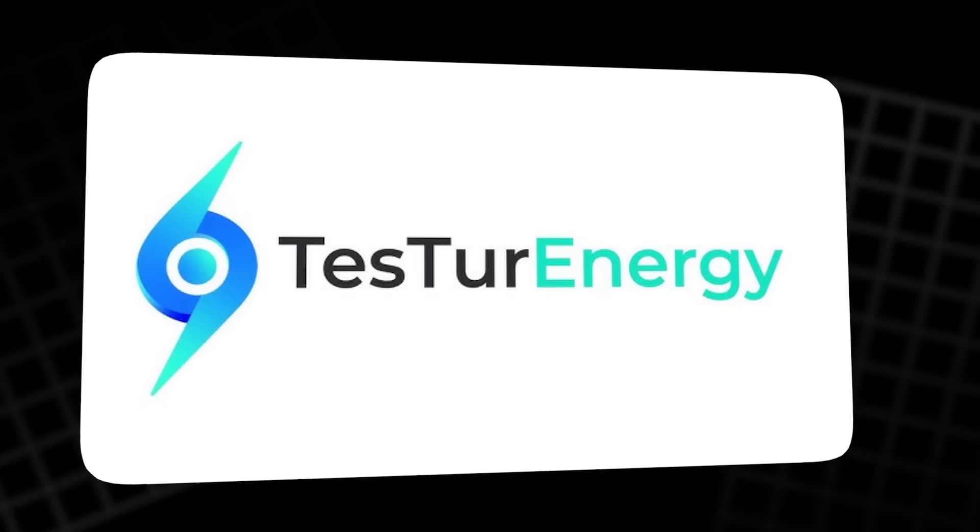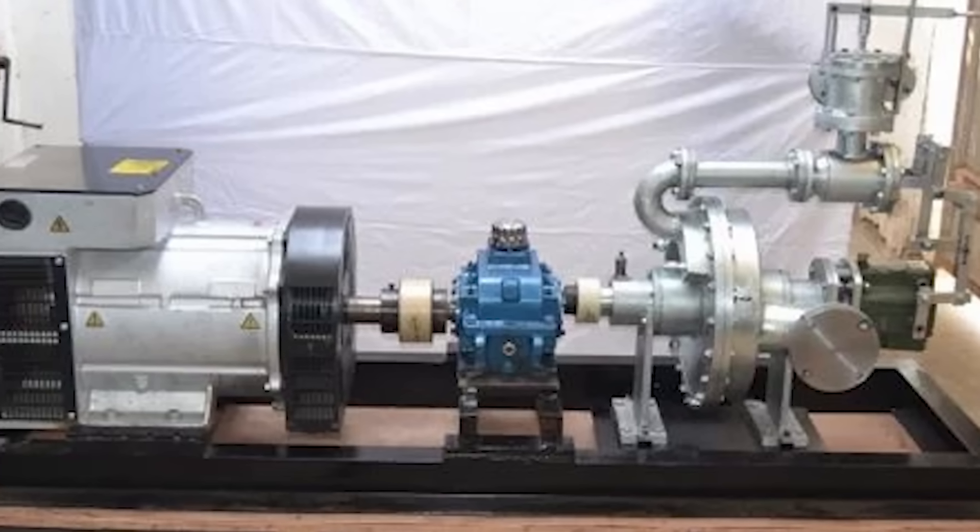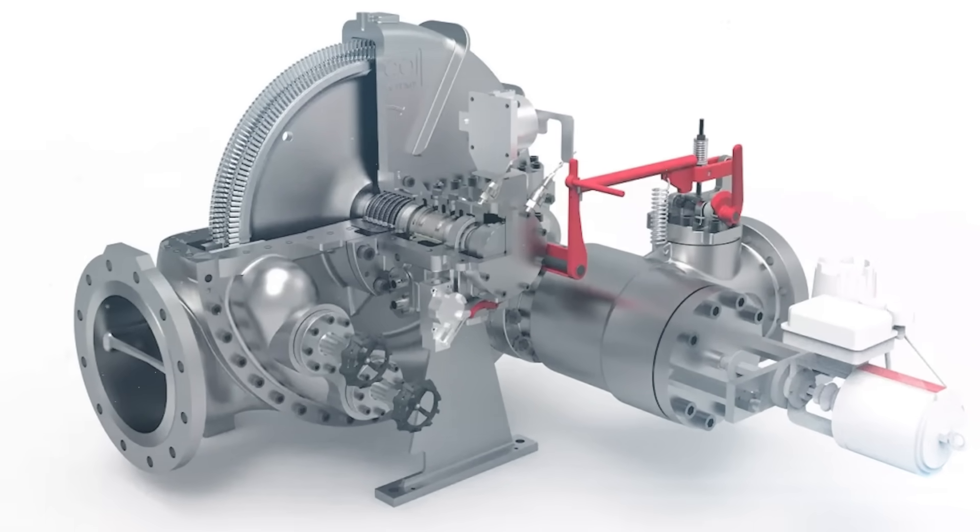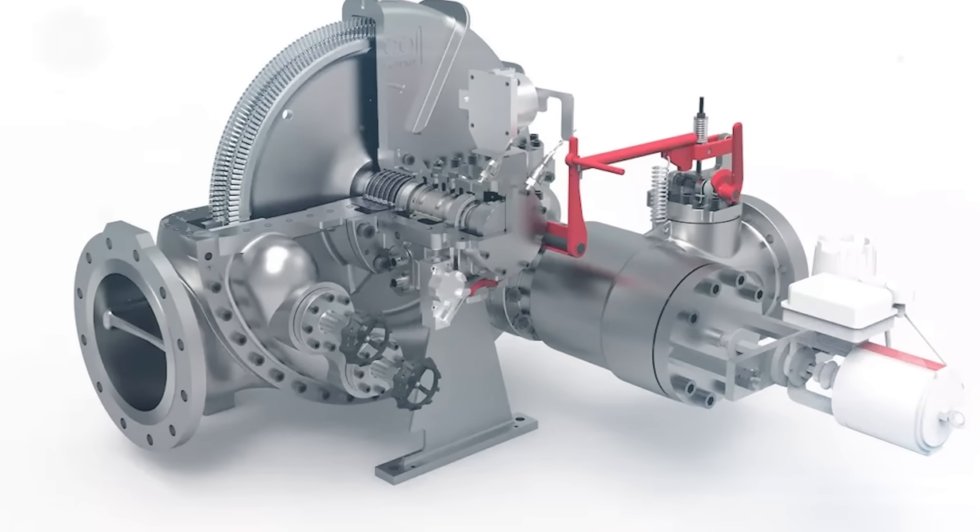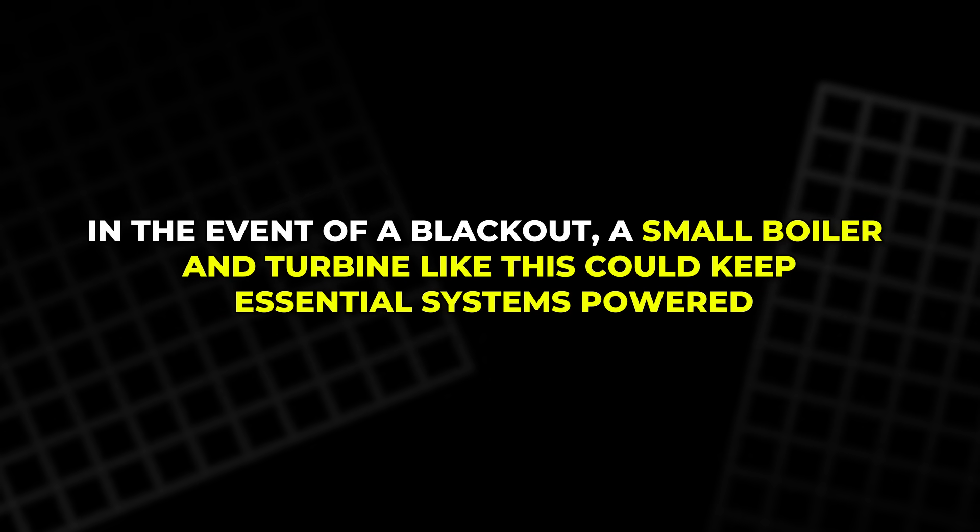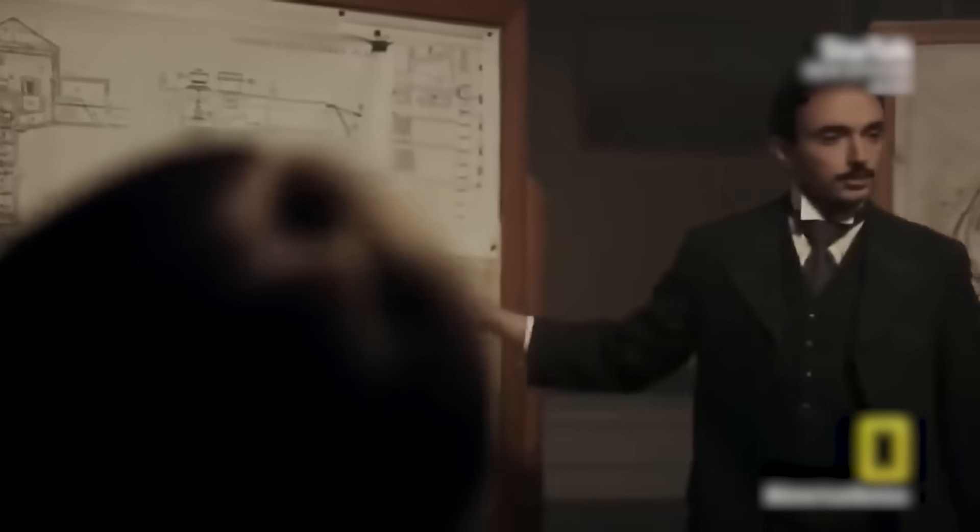Charlie's company, Testa Energy, now develops these turbines as micro-steam power plants. Each unit is compact enough to fit on a workbench and capable of running independently from the electrical grid. In the event of a blackout, a small boiler and turbine like this could keep essential systems powered, entirely off-grid.